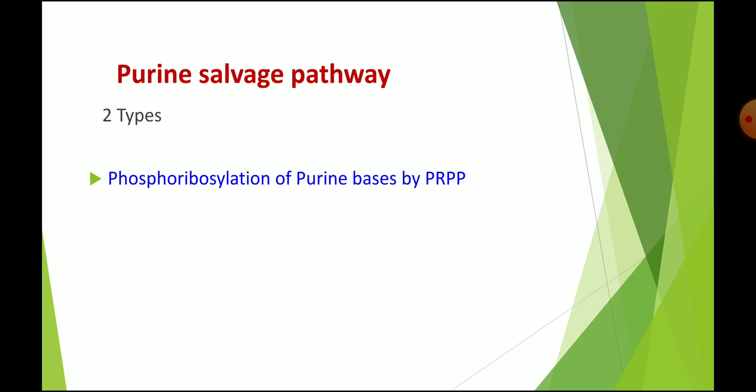There are two types of salvage pathway operations. The first is phosphoribosylation of purine bases by PRPP. The second is direct phosphorylation of the purine nucleoside. Purine bases are adenine and guanine, and their nucleosides are adenosine and guanosine. In the first case, phosphoribosylation of adenine or guanine occurs; in the second, only a phosphate group is added to the nucleosides.